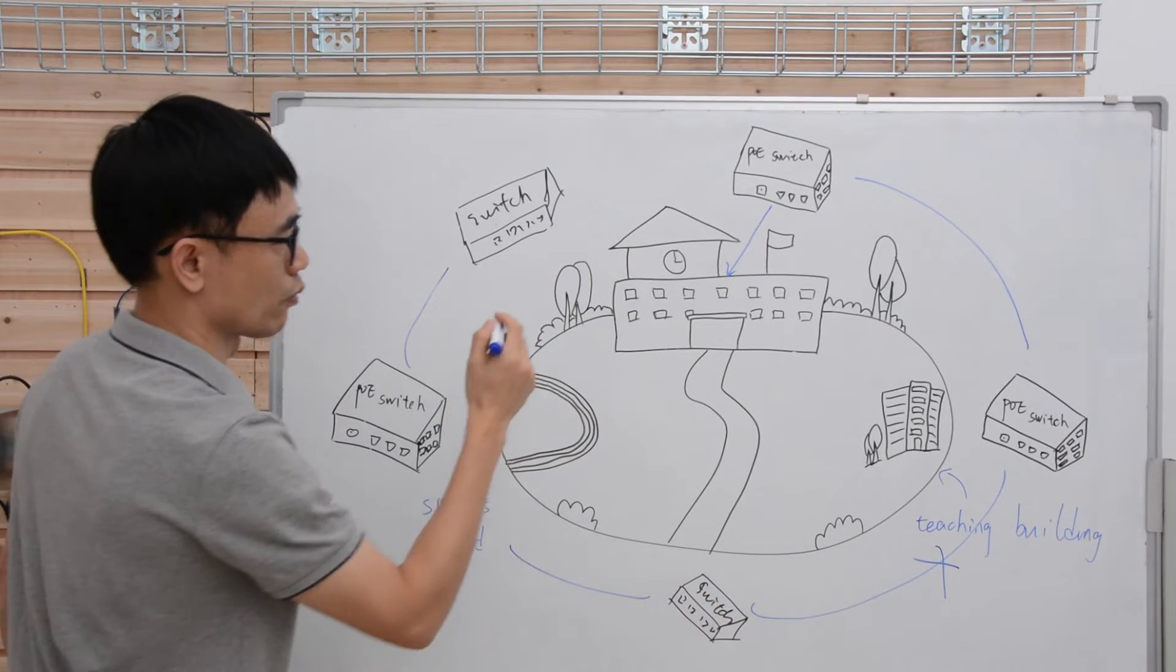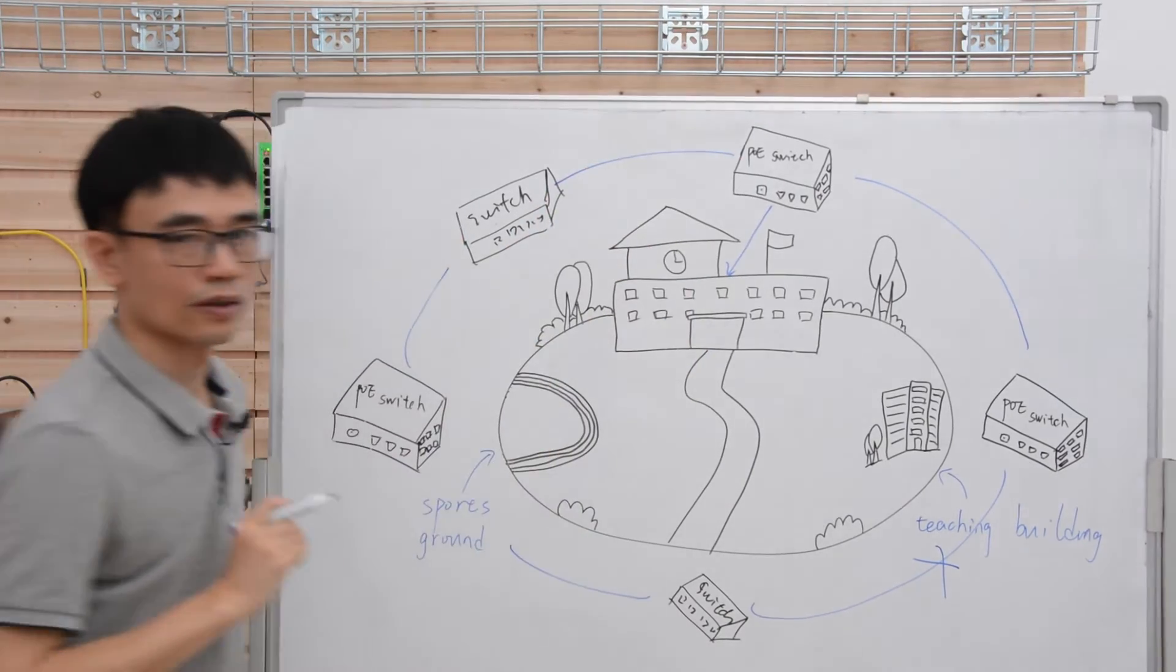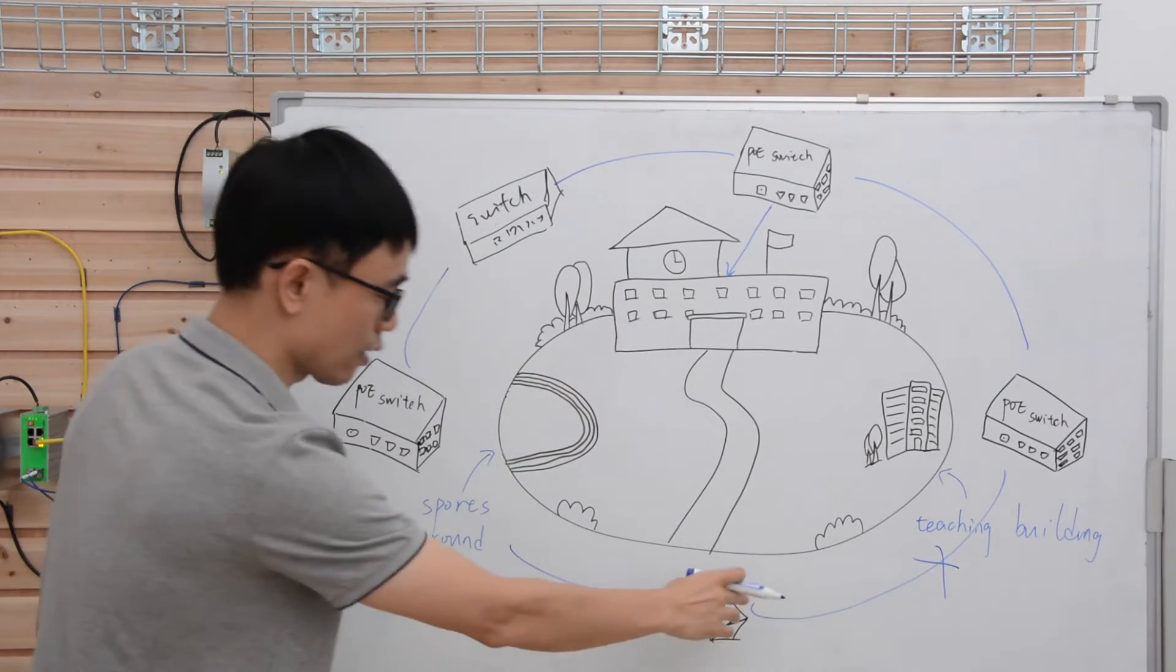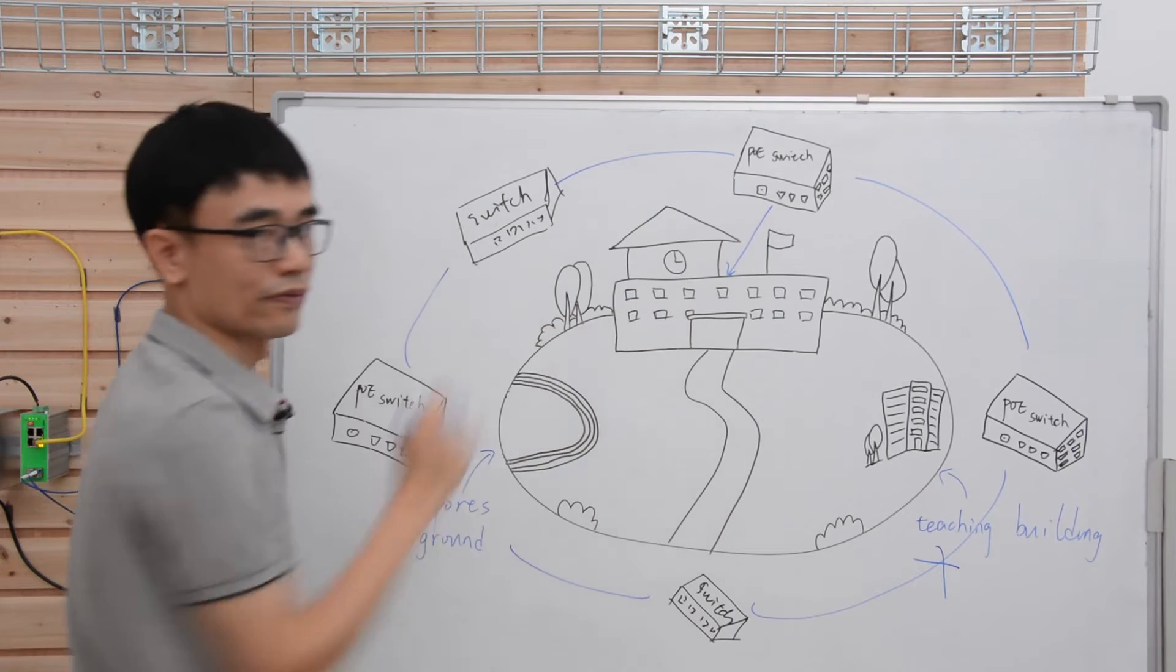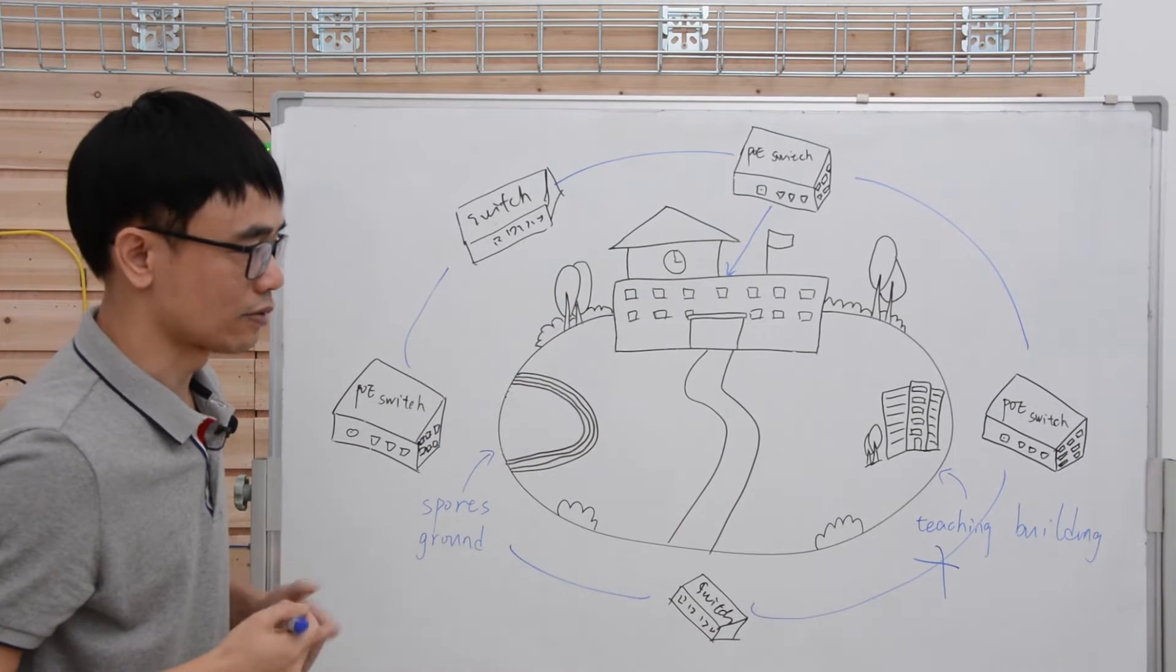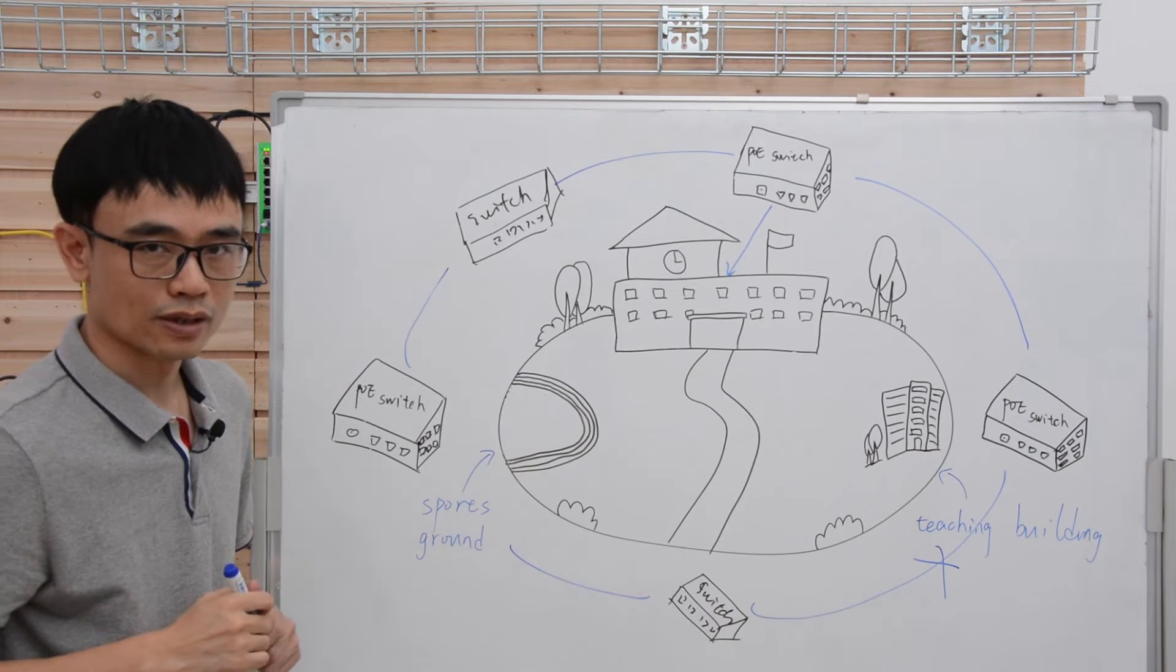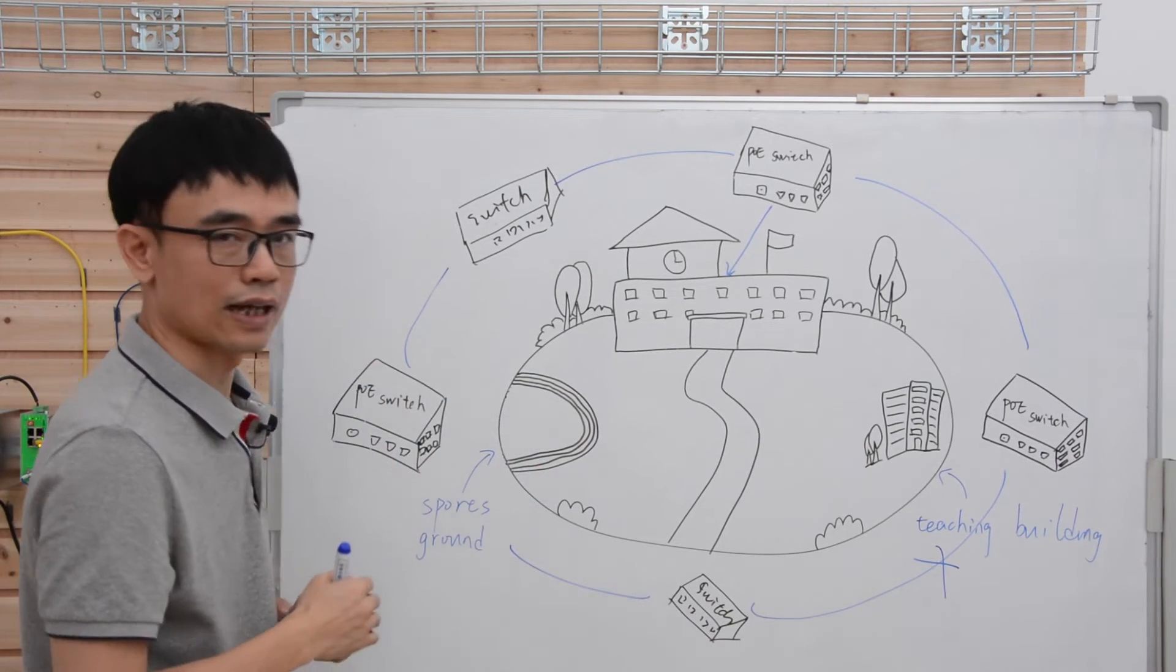So the solution, what we need is just connect the first one to the last one. If this link is defective, the data will turn around from the third one and return to the first one. That makes sense, right? And this is the ERPS technology. Now, let's move to the workshop and see how to implement this kind of setup.